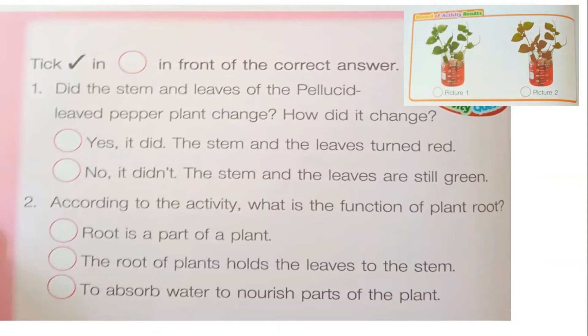Number one: Did the stem and leaves of the pellucid leaf pepper plant change? Stem means the trunk, and lips means the leaves of the pepper plant used in the experiment. Did they change?